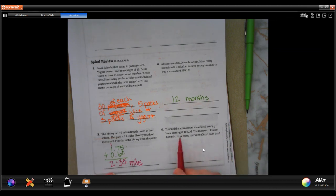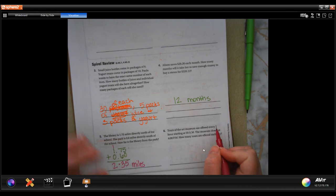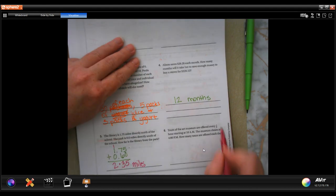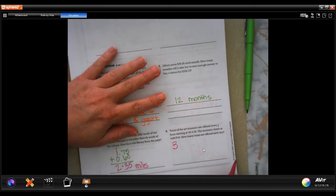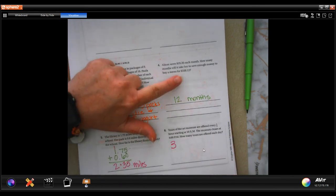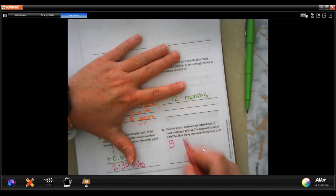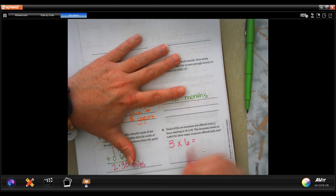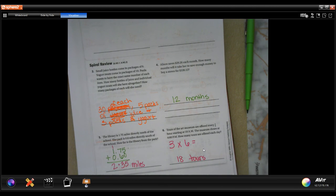Tours of the art museum are offered every third of an hour starting at 10 a.m. The museum closes at 4 p.m. How many tours can be offered each day? Well, in each hour there are going to be three 20-minute periods. That's why it's one third, so there's going to be three of those each hour. So three each hour, and we're going to go from 10 to 4. So 10 to 11, 12, 1, 2, 3, 4, that's six hours. 18 tours.